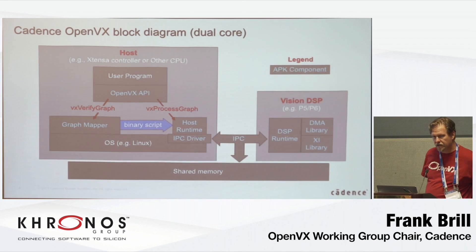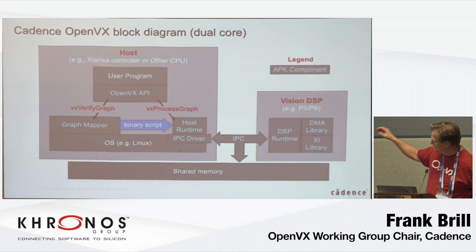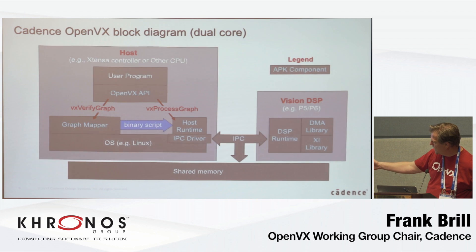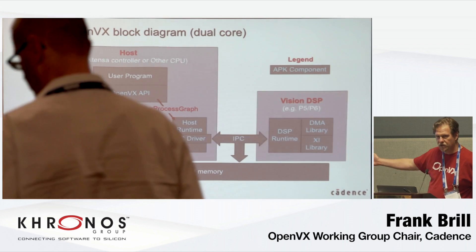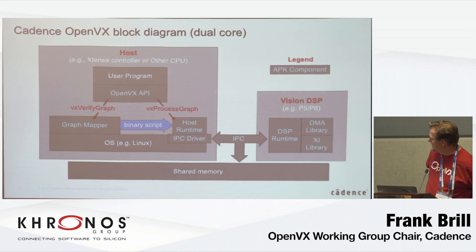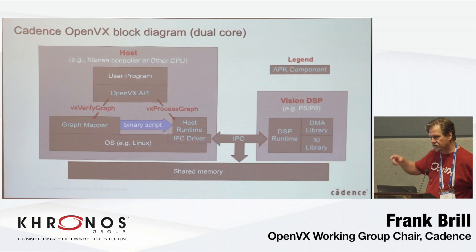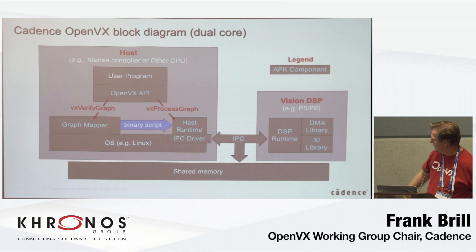In a typical system, most code runs on the host: your application, the API, graph construction, and the graph mapper which emits the binary script. When you call process graph, the host runtime communicates to the DSP and says run this binary script and let me know when you're done. The host can then go do something else while the DSP autonomously executes the entire graph — DMAing tiles in, launching kernels, overlapping DMA and compute for efficiency.